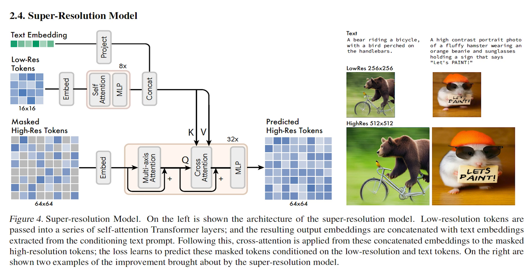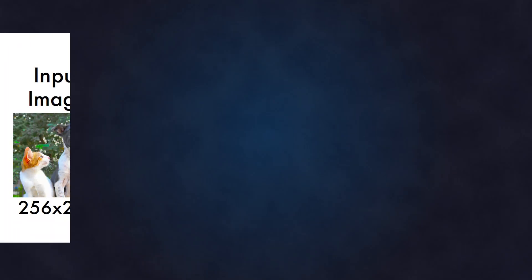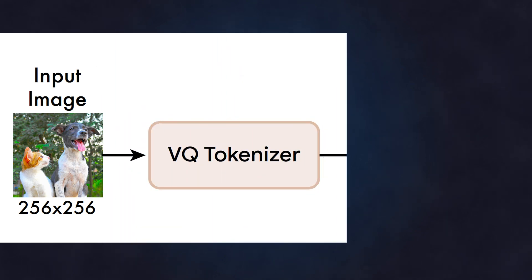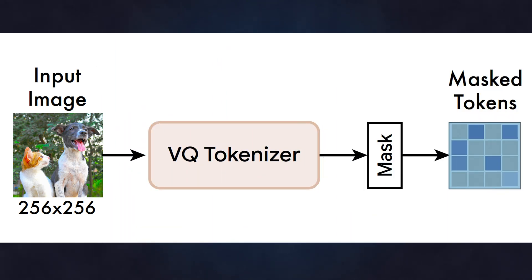On the right are shown two examples of the improvement brought about by the super-resolution model. The use of the VQ tokenizer is very interesting — it encodes an input image to a sequence of discrete tokens and decodes a token sequence back to an image.